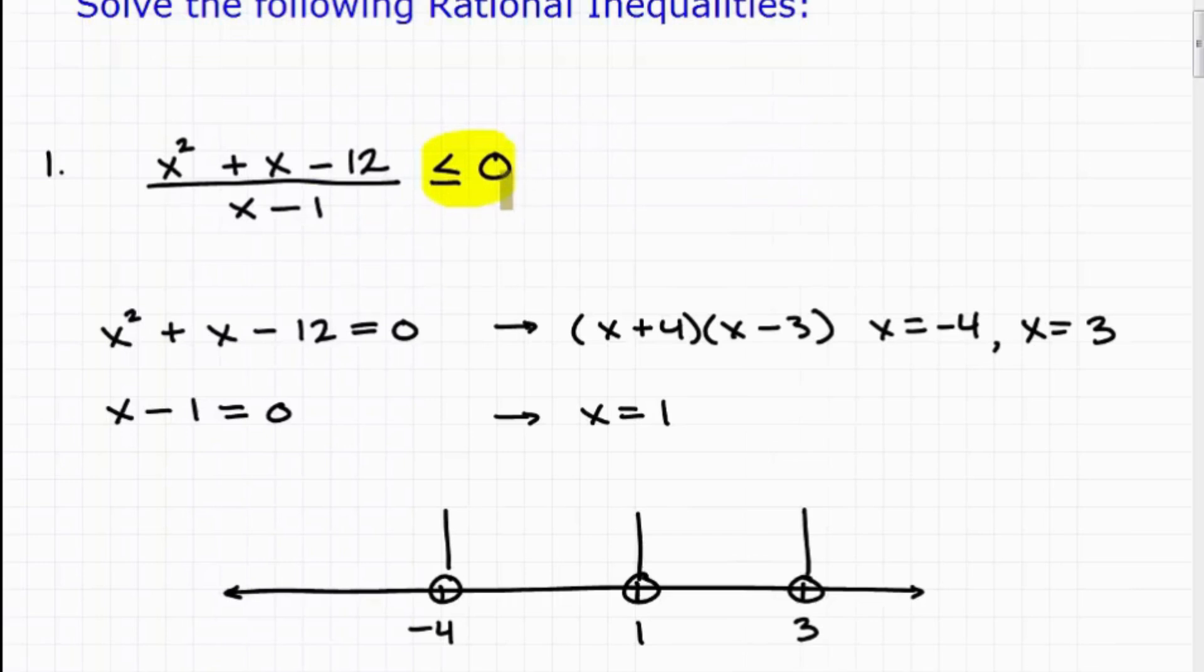So the next thing is we need to go ahead and find our critical values. Now, recall from the lesson, the critical values are going to be the 0s from the numerator and denominator. In other words, you're going to set those numerator and denominators respectively equal to 0 and solve. So you can see here, this is the work that I've done.